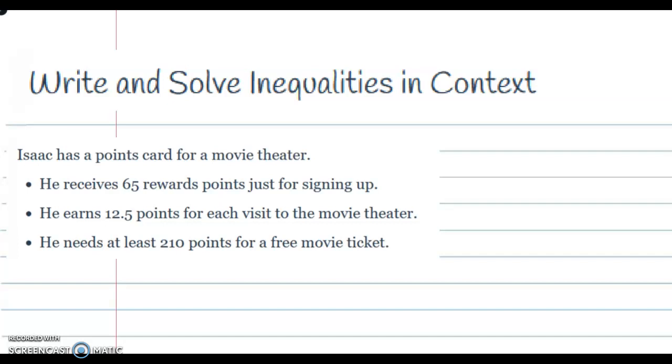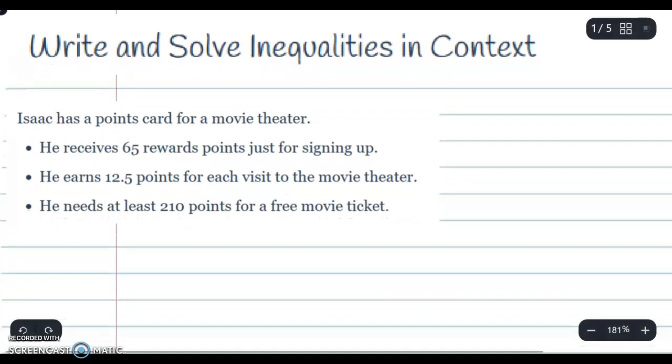Let's take a look. Isaac has a points card for a movie theater. He receives 65 reward points just for signing up and he earns 12.5 points for each visit to the movie theater. He needs at least 210 points for a free movie ticket. We're going to set up a table to get a better understanding of what we got here.